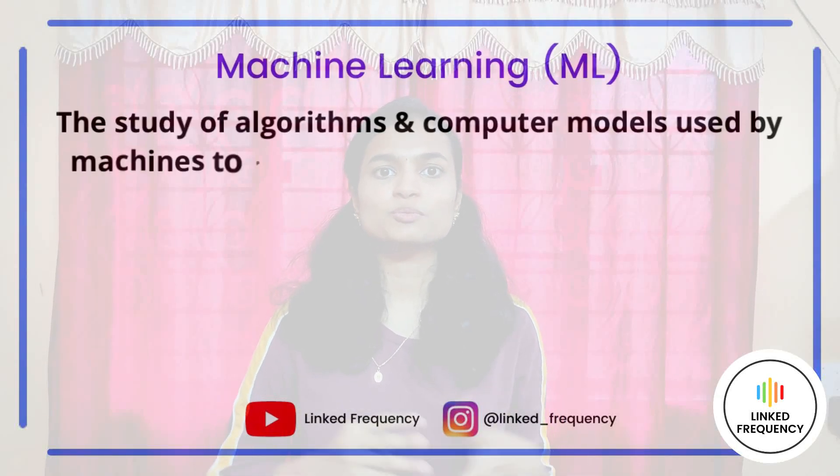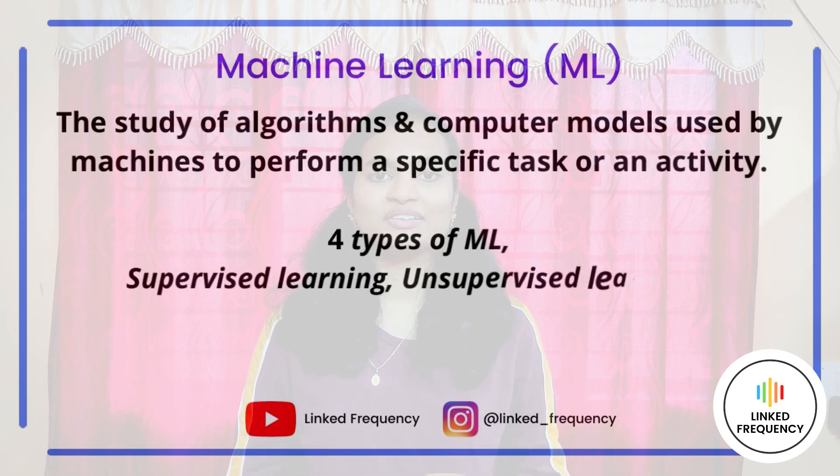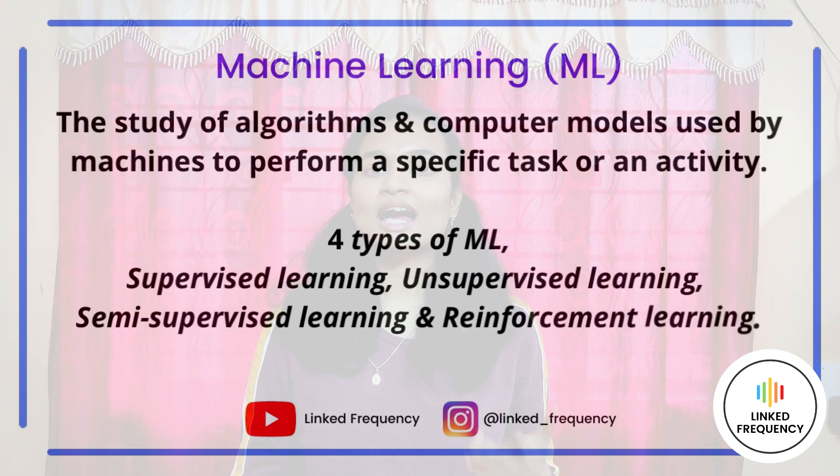Machine learning is the study of algorithms and computer models used by machines to perform a specific task or activity. There are four types of machine learning: supervised learning, unsupervised learning, semi-supervised learning, and reinforcement learning. In terms of efficiency, machine learning algorithms are less efficient than deep learning because they cannot work on huge sets of data. In terms of accuracy, machine learning focuses more on accuracy than success ratio, analyzing conditions such as true or false or yes or no.